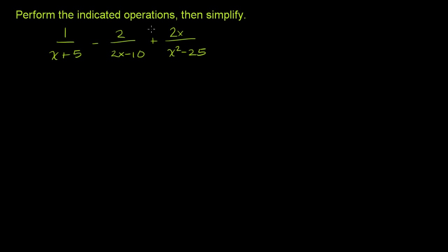Perform the indicated operations, then simplify. So we have three rational expressions here. We're going to subtract this one, and we're going to add this one. Just like if we were adding and subtracting a bunch of fractions, we really have to find a common denominator here.